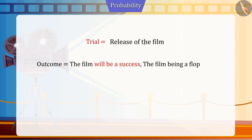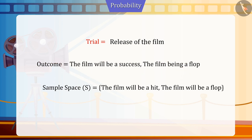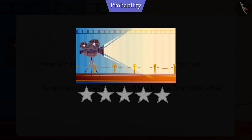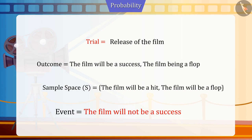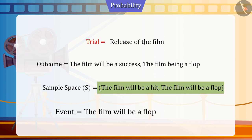First, the film will be a hit. Second, the film will be a flop. These will be the two outcomes. So here, the sample space will be set S. In the previous video, we had seen more chances of the film not working at the time of its release, which is an element of sample space. Here, the film being a flop is an event. Hence, we can say that every element of sample space is an event.